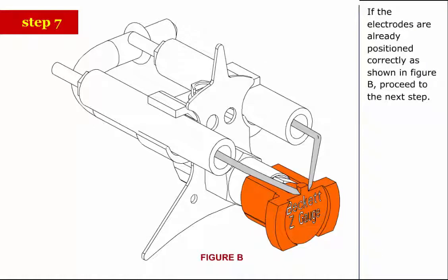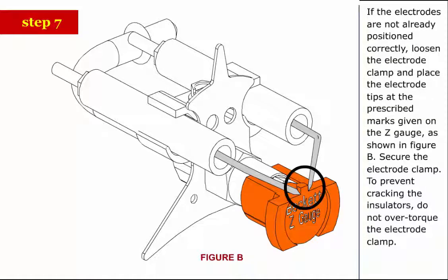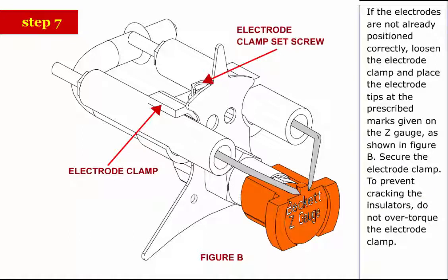Step 7: If the electrodes are already positioned correctly as shown in Figure B, proceed to the next step. If the electrodes are not already positioned correctly, loosen the electrode clamp and place the electrode tips at the prescribed marks given on the Z gauge as shown in Figure B. Secure the electrode clamp.